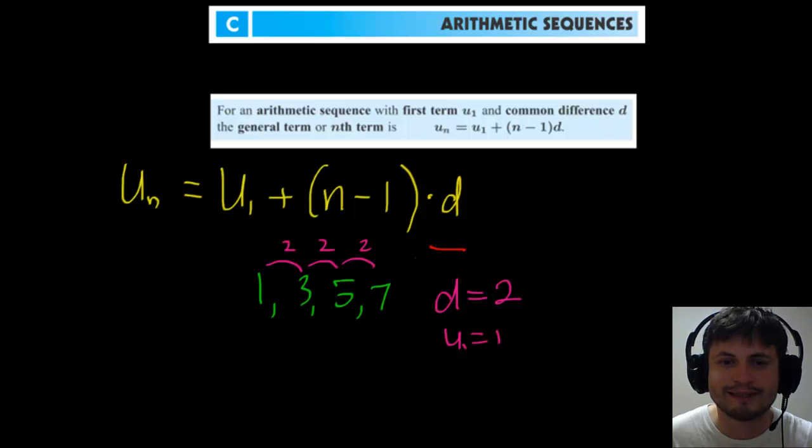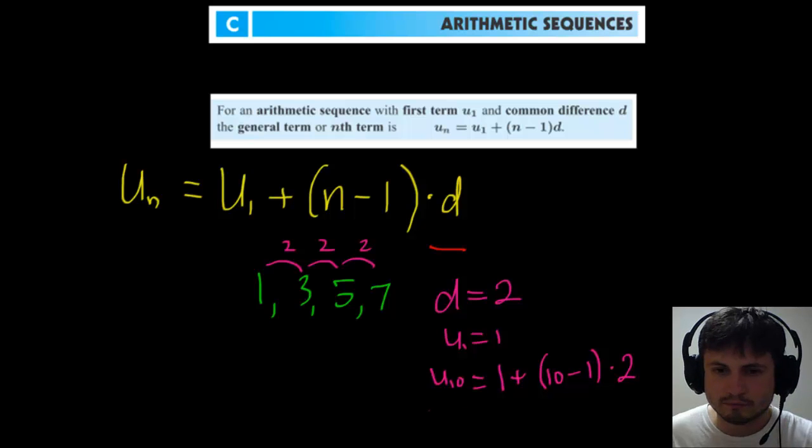So if we want to find the 10th number, if we want to find u10, we have to use this particular arithmetic sequence to express it as follows. It will be 1 plus 10 minus 1 multiplied by 2. And the answer to this is 19.